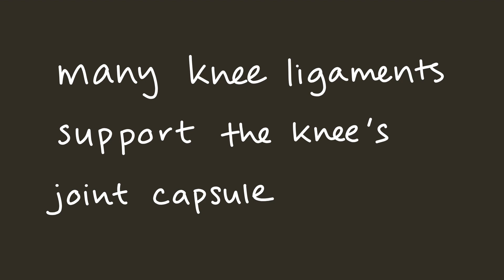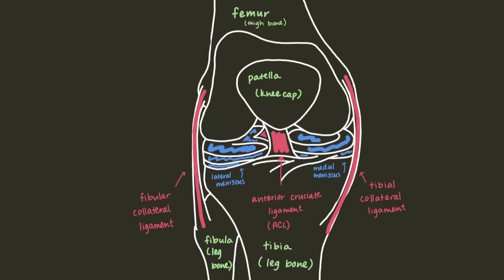Now again, I'm not going to cover all the ligaments, and I'm not going to even attempt to talk about the tendons and muscles that are involved, but I'd like to highlight three particular ligaments: the fibular and tibial collateral ligaments, and the anterior cruciate ligament, better known as the ACL.